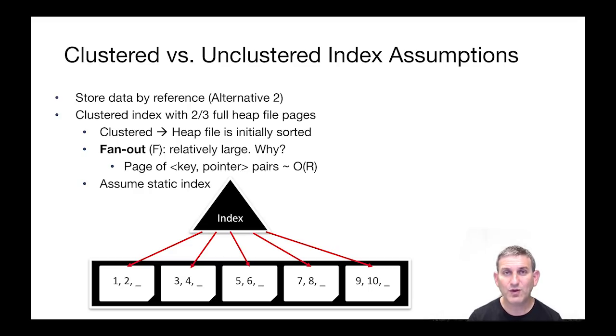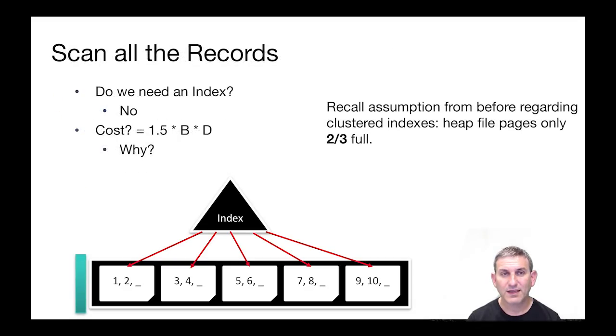The fanout of the B+ tree is going to be large, F. Why large? Well, first of all, we've got big pages. Second, at the leaf level, it's key pointer pairs, so we're not even storing full tuples. And in our analysis, we'll assume a static index for the moment.